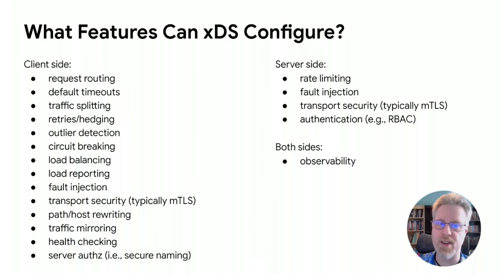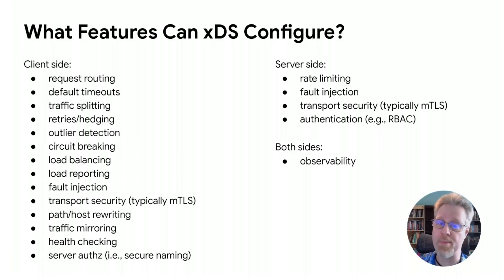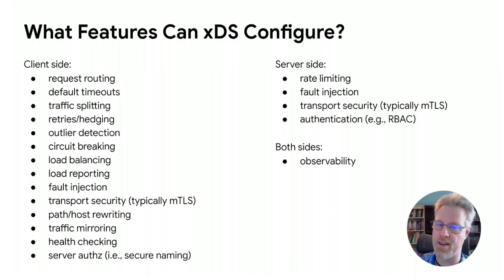This is a list of the kind of features that XDS can configure. Some examples include request routing, retries, load balancing, and MTLS. This is not a comprehensive list. The XDS API is extensible, so it's easy to add new functionality as needed, and more features are being added all the time.